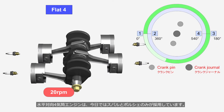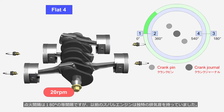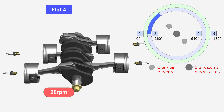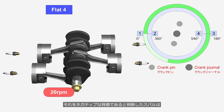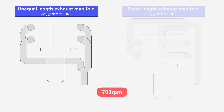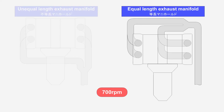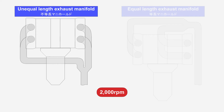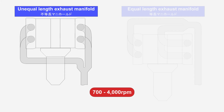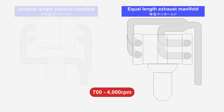Flat 4 engines are currently used only by Subaru and Porsche. The firing interval is an even 180 degrees, but previous Subaru engines had a distinctive exhaust sound. To offset the exhaust pipe from the center of the vehicle body, the exhaust manifolds of the left and right cylinders had different lengths. Subaru regarded it as a negative characteristic, so from the 2000s onward they adopted equal length exhaust manifolds, eliminating the distinctive exhaust sound. Compare the sounds.